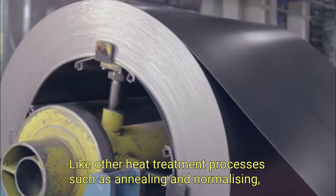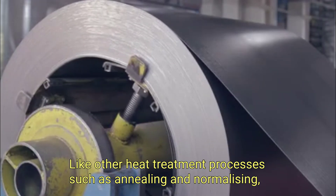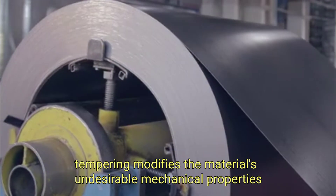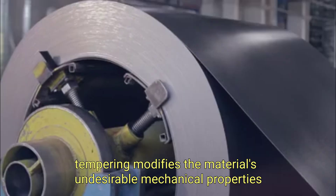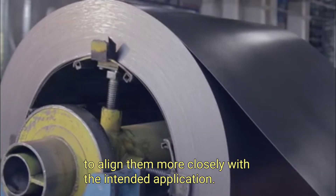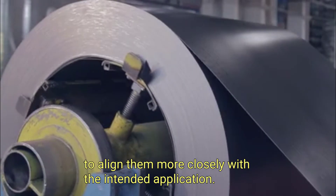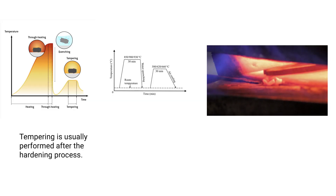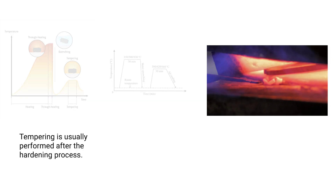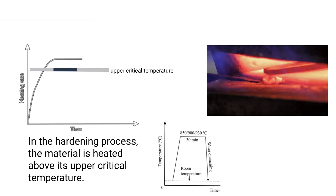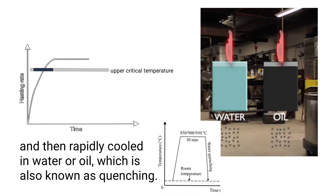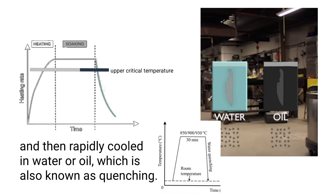Like other heat treatment processes such as annealing and normalizing, tempering modifies the material's undesirable mechanical properties to align them more closely with the intended application. Tempering is usually performed after the hardening process. In the hardening process, the material is heated above its upper critical temperature and then rapidly cooled in water or oil, which is also known as quenching.